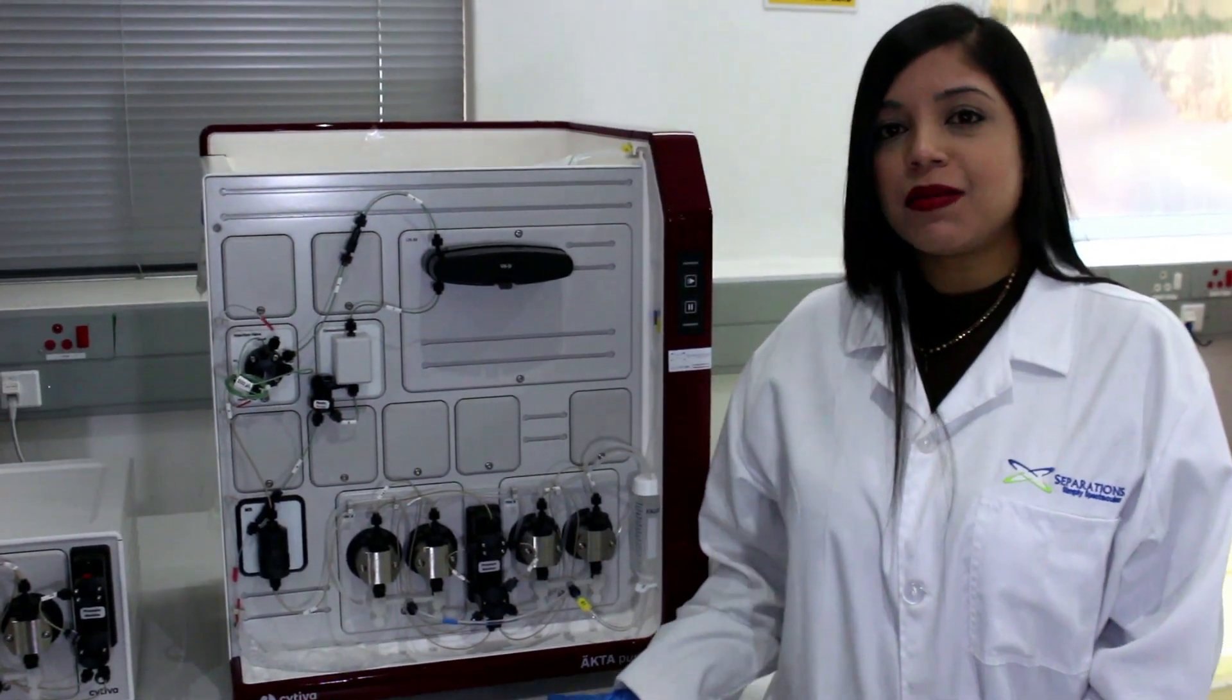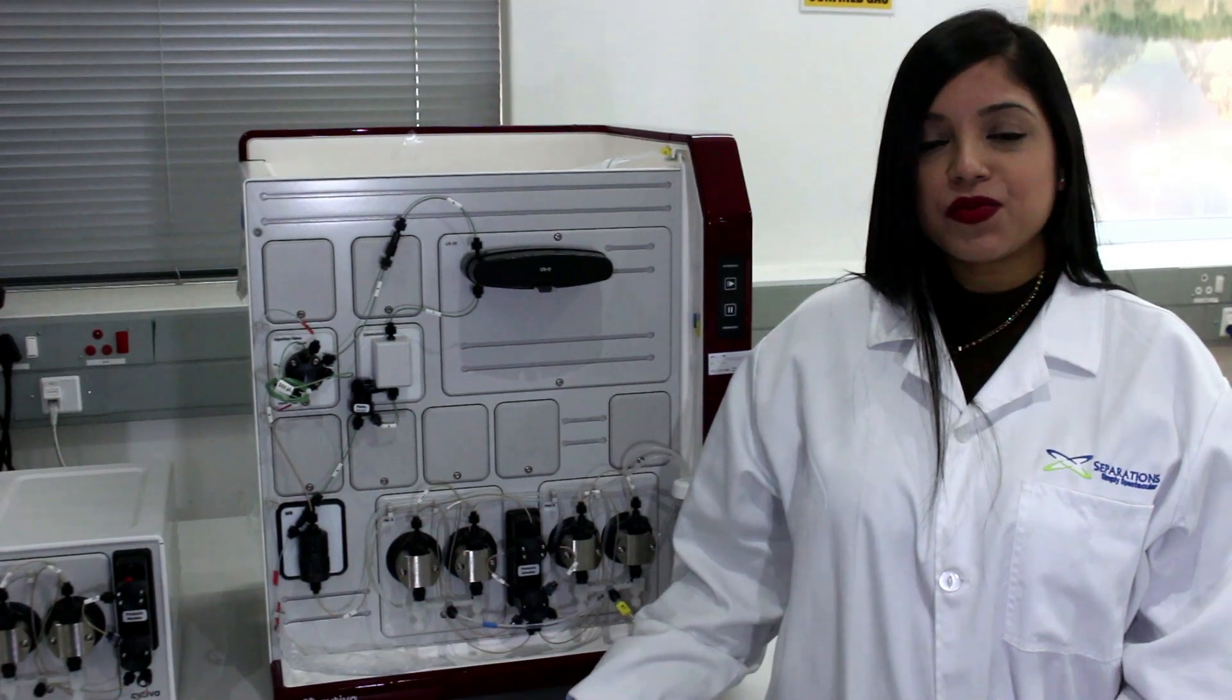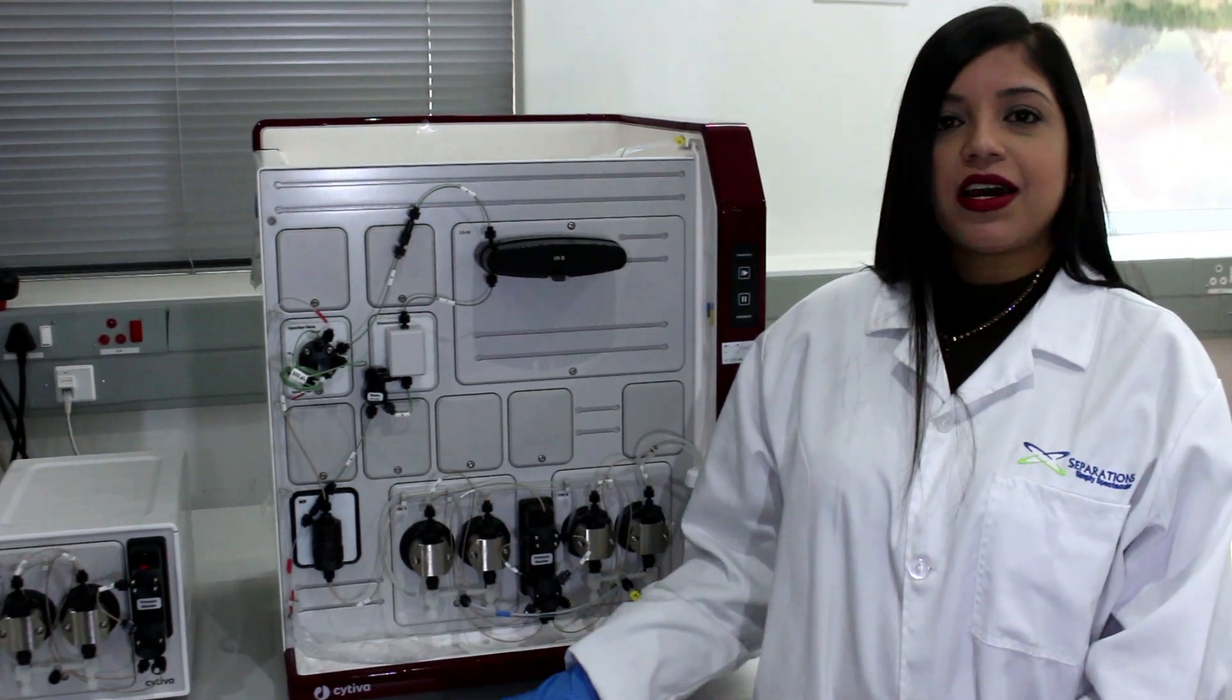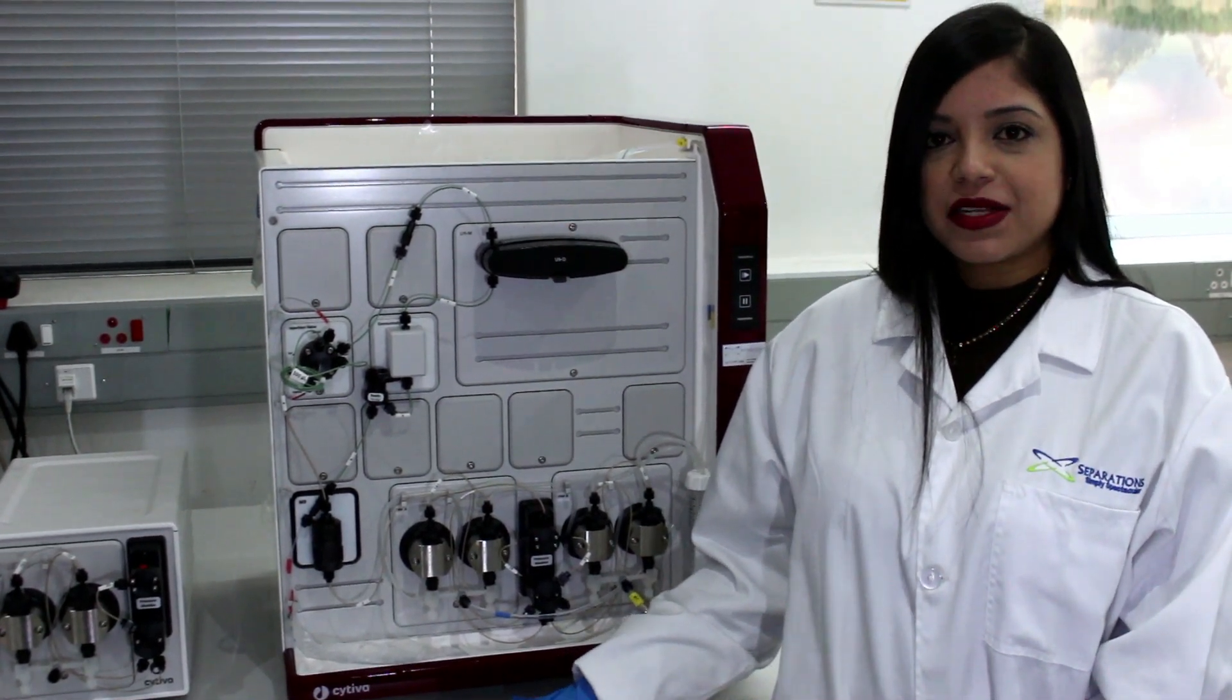The ActaPure system comes in two different versions: the ActaPure 25 and the ActaPure 150. The ActaPure 25 achieves a flow rate of up to 25 milliliters per minute, and the ActaPure 150 achieves a flow rate of up to 150 milliliters per minute.